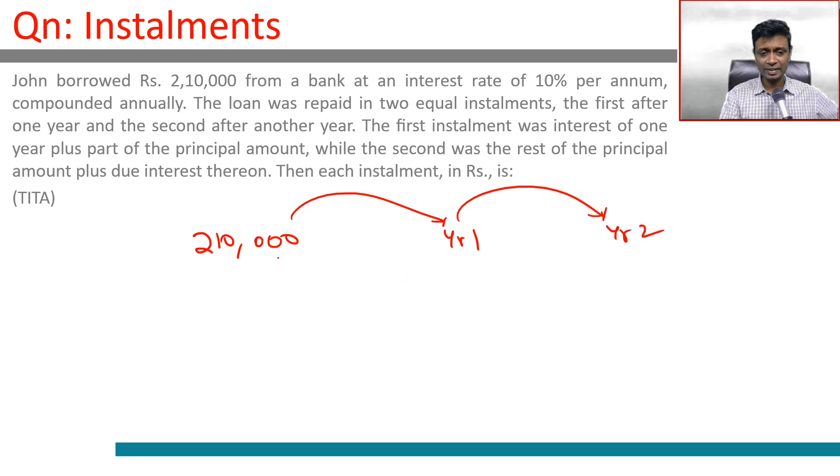To start with, 210,000 at the end of year 1 will become 210,000 into 1.1, that will be the amount outstanding. And so 10% interest at the end of year 2, this should have become 210 into 1.1 whole square.